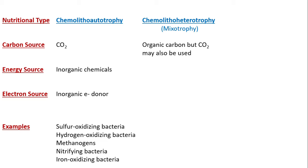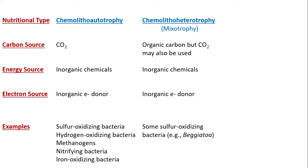For chemo-litho-heterotrophs or mixotrophs: the carbon source is organic carbon, but CO₂ may also be used — that's why they are called mixotrophs, because they can use both organic compounds and CO₂. Energy source is inorganic chemicals; electron source is inorganic electron donors. A very important example is Beggiatoa — a sulfur-oxidizing bacterium that is a mixotroph. This is an important question from competitive exams.